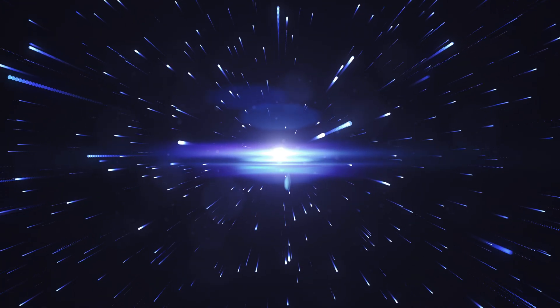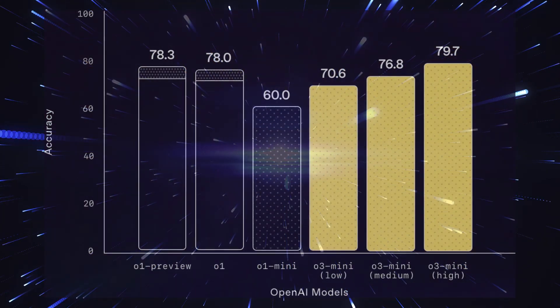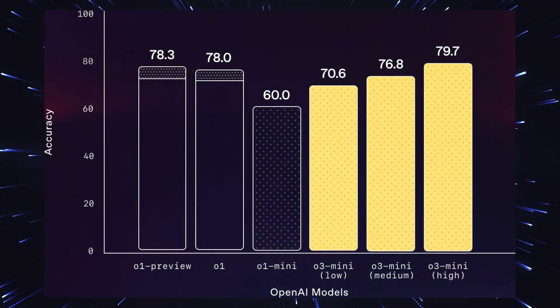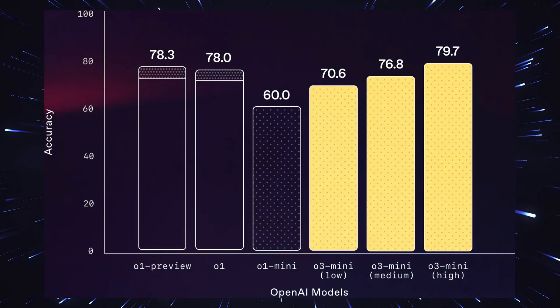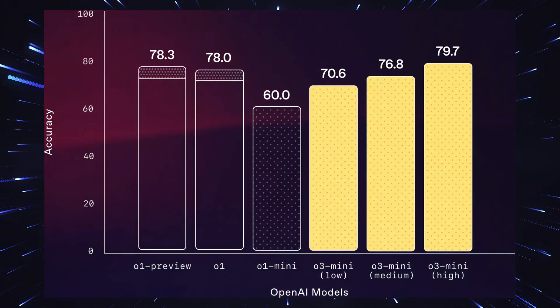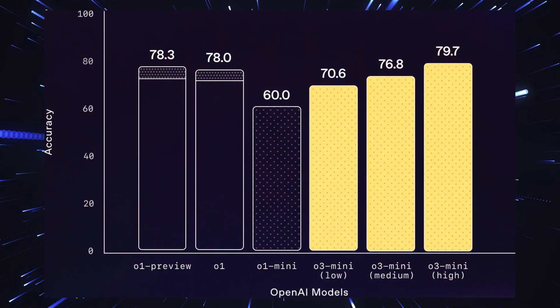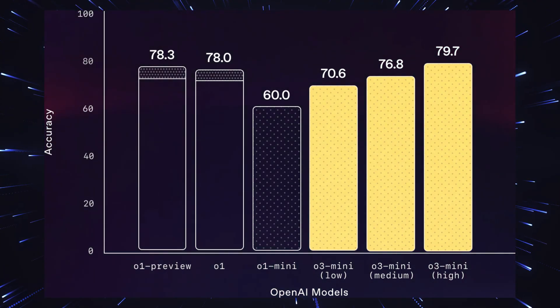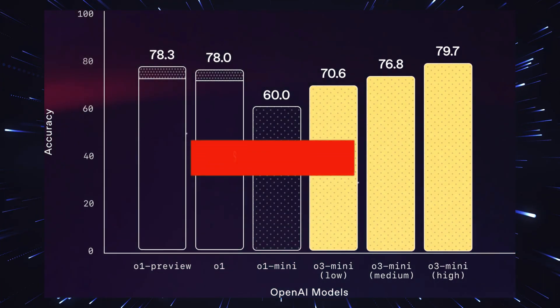Another interesting point is the integration of web search directly into the model. You just have to activate the corresponding button and O3 Mini already combines its impressive reasoning capabilities with current information from the internet, which significantly expands the application possibilities once again. Particularly exciting is also the speed at which O3 Mini works. Tests have shown that it responds on average 24% faster than O1 Mini, with an average response time of only 7.7 seconds compared to 10.1 seconds for O1 Mini.